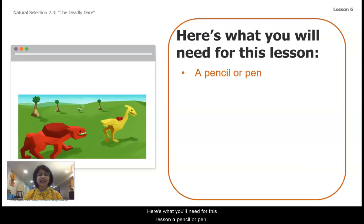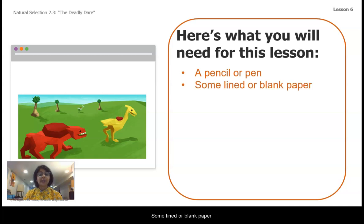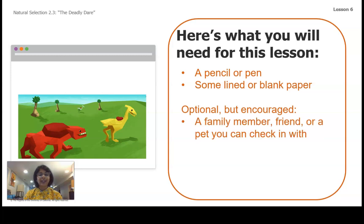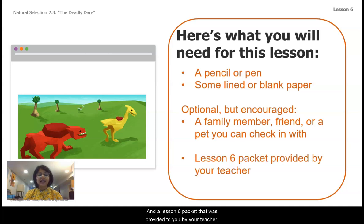Here's what you'll need for this lesson: a pencil or pen, some lined or blank paper, optional but encouraged — a family member, friend, or a pet you can check in with, and a Lesson 6 packet that was provided to you by your teacher.